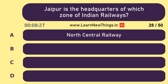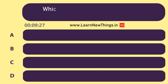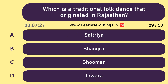Jaipur is the headquarters of which zone of Indian Railways? Northwestern Railway Zone. Which is the traditional folk dance that originated in Rajasthan? Ghoomar.